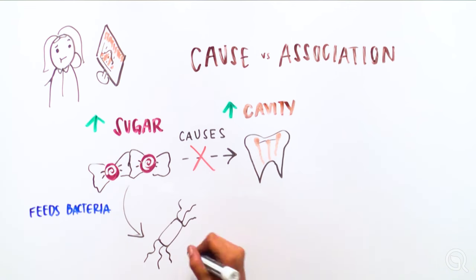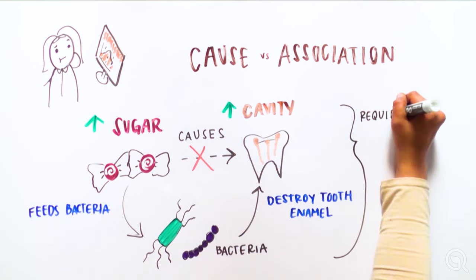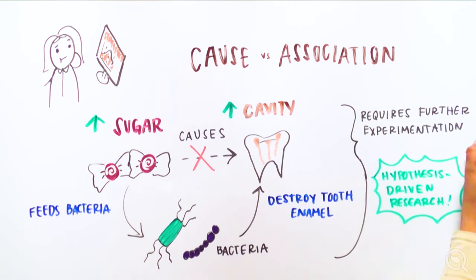The reality is that sugar feeds bacteria that can destroy tooth enamel, leading to a cavity. So fully testing our hypothesis requires further experimentation. This is hypothesis-driven research.